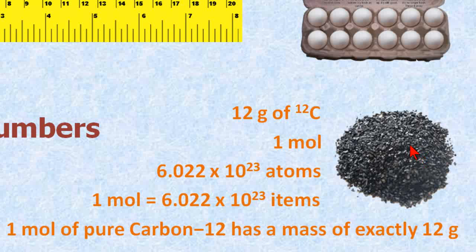And then on the lower right here, we have a pile of carbon-12. Later in the class, you'll learn that one mole of pure carbon-12 has a mass of exactly 12 grams, and these 12 grams, by definition, contain 6.022 times 10 to the 23 atoms.